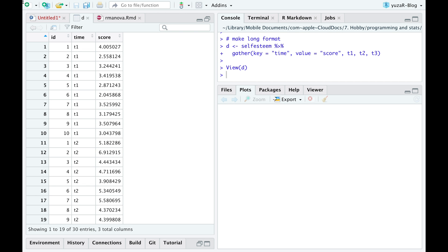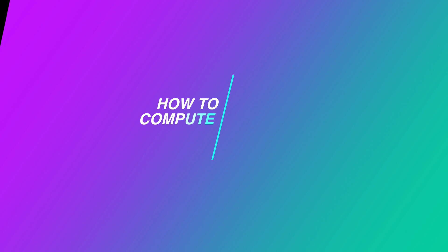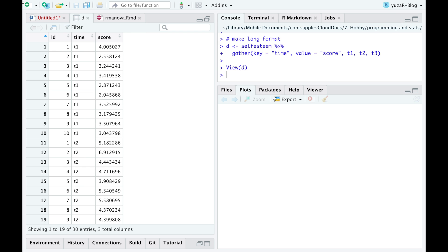For repeated measures, the data needs to be sorted, so that the first observation of the first time point pairs with the first observation of other time points. If our data is sorted, we are ready to compute the test.